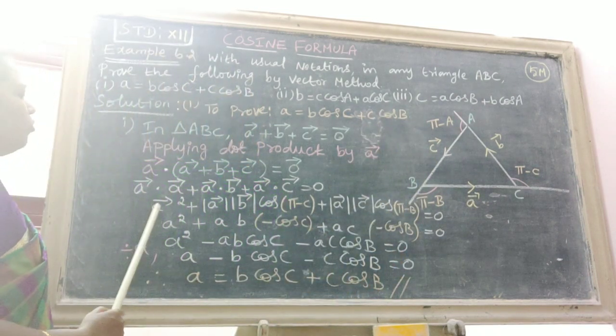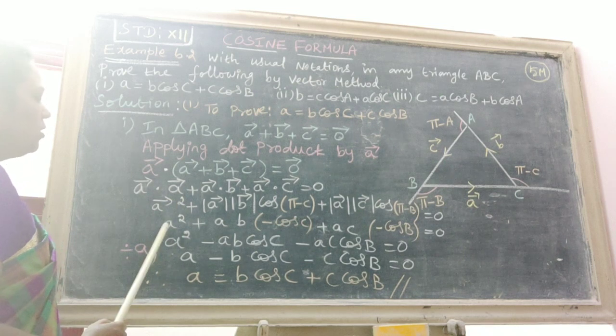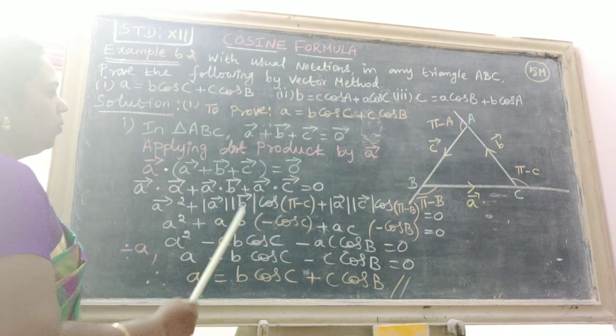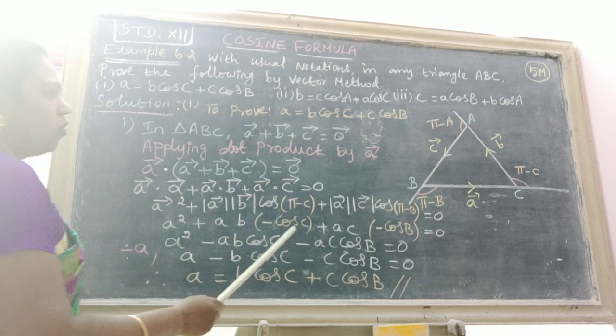Therefore we get A squared plus AB cos(π - C), which equals minus AB cos C.